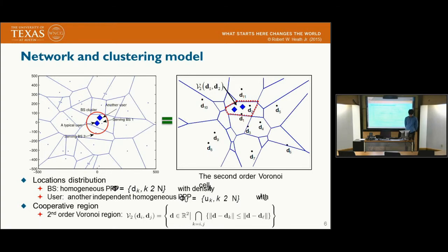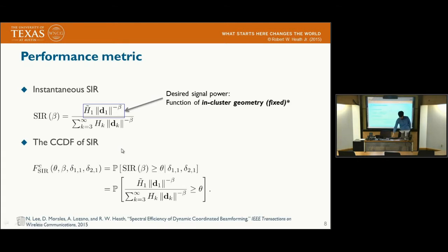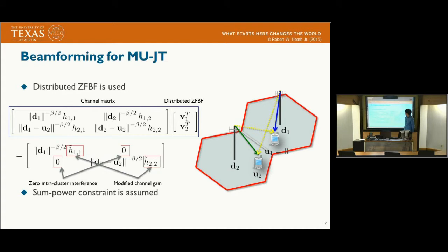As a network model, we consider base stations located according to a homogeneous Poisson point process, and we characterize the cooperative region as second-order Voronoi regions to clarify our concept. Specifying the multi-user joint transmission beamforming, we employ distributed zero-forcing. When the distributed zero-forcing beamforming is applied and perfect CSIT is assumed, we have zero intra-cluster interference. However, by applying distributed zero-forcing, the desired channel gain is also modified, which is the key difference compared to centralized conventional zero-forcing beamforming. We also assume a power constraint here.